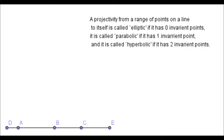Given this, if a projectivity is not the identity, it must have either 0, 1, or 2 invariant points. We organise projectivities into families accordingly: projectivities with 0 invariant points are called elliptic projectivities, those with 1 invariant point are called parabolic projectivities, and those with 2 invariant points are called hyperbolic projectivities.